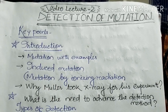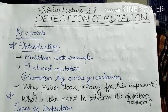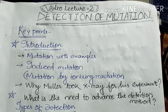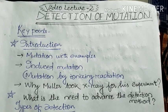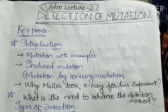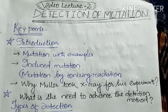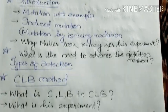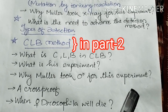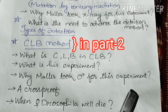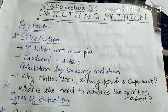Welcome students to another new video. Today's topic is detection of mutation. We are going to cover the following key points: first, introduction with mutation examples; second, induced mutation — mutation by ionizing radiation; third, why Muller took X-rays for his experiment; fourth, the need to advance detection methods; fifth, types of detection including the CLB method; and finally, why Muller took male Drosophila for his experiment.